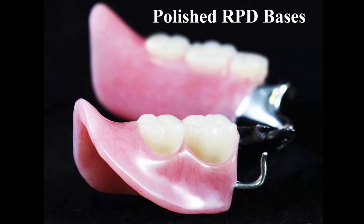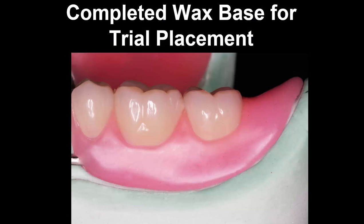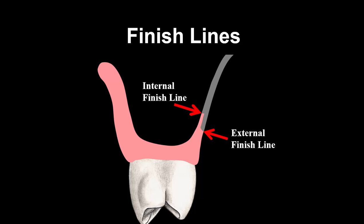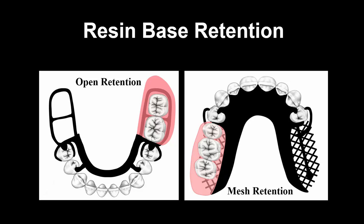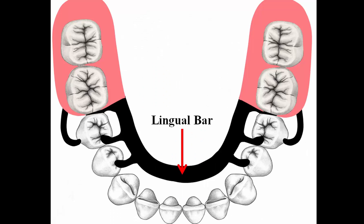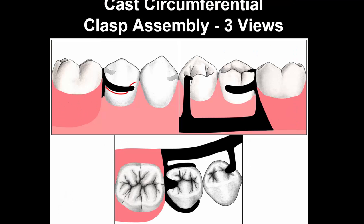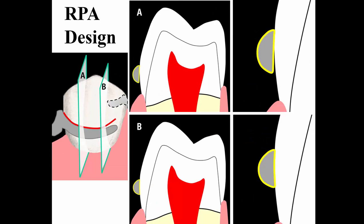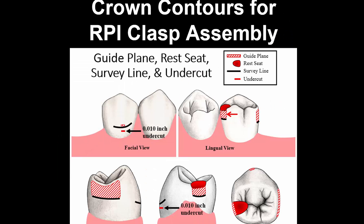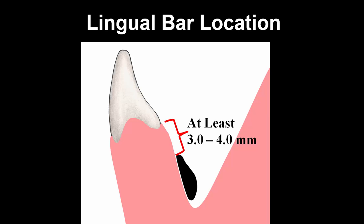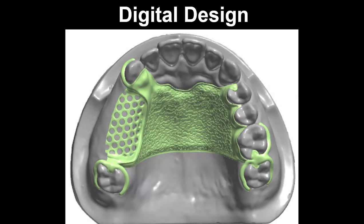There are samples from over 3,000 color pictures showing polished removable partial denture bases and what they ought to look like. Here are a waxed base, internal and external finish lines that are not located over each other, different types of resin base retention, a lingual bar major connector, and all sorts of pictures showing three views of all the major clasp assemblies — even cross-sectional views — showing different clasp assemblies, the crown contours that you need to produce, and the location of the lingual bar. The chapter on digital design shows a number of different RPD designs.